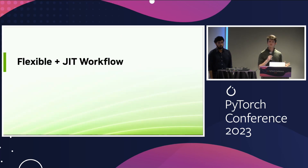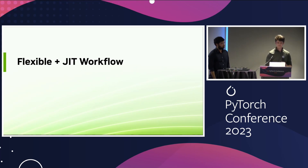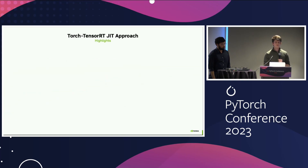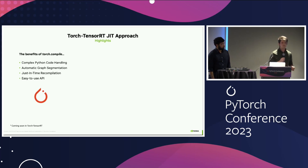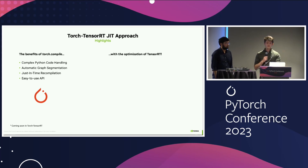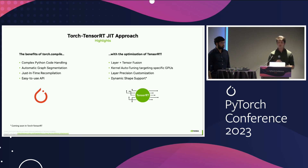The JIT approach gives you the benefits of Torch.compile, which includes complex Python code handling, automatic graph segmentation, and an easy-to-use API, combined with the optimization power of NVIDIA's TensorRT — including layer and tensor fusion, kernel auto-tuning, and the ability to select the precision of your layers.